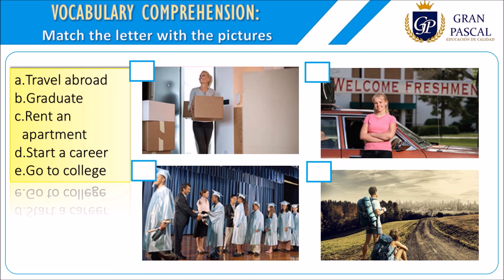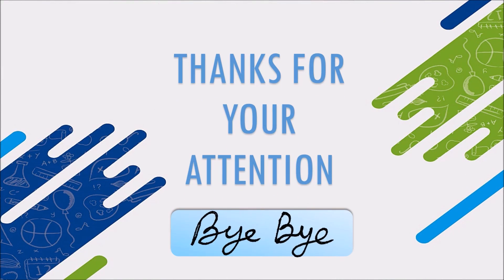Now let's continue with the final activity — a vocabulary exercise. You only have to match the pictures with the correct phrases. For instance: travel abroad, graduate, rent an apartment, start a career, and go to college. Remember there is one extra word. Letter C is rent an apartment, letter E is go to college, letter B is graduate, and travel abroad is the last match. The extra letter was D — start a career — we couldn't find any picture related to that phrase. Good job students, excellent! Remember to keep practicing. See you next time, and thanks for your attention. Bye!